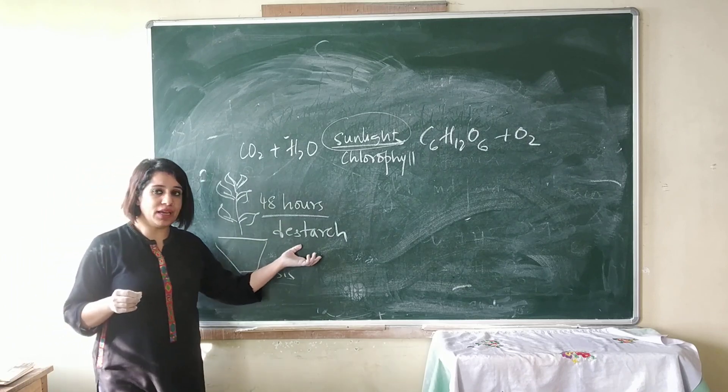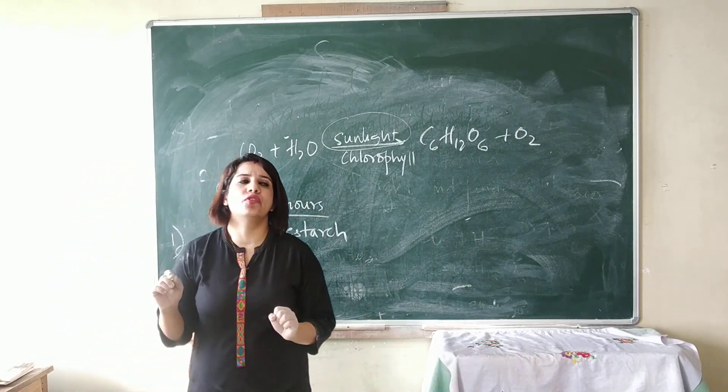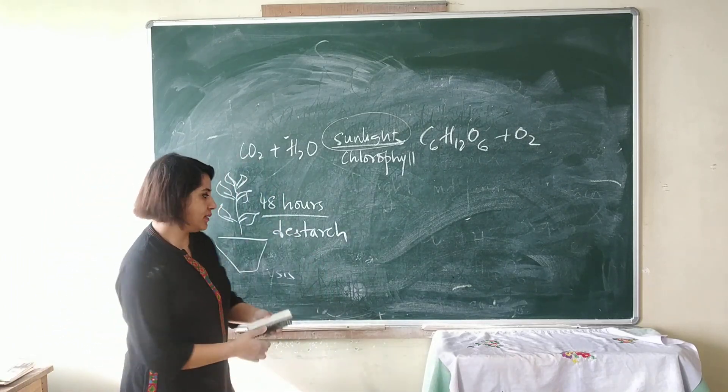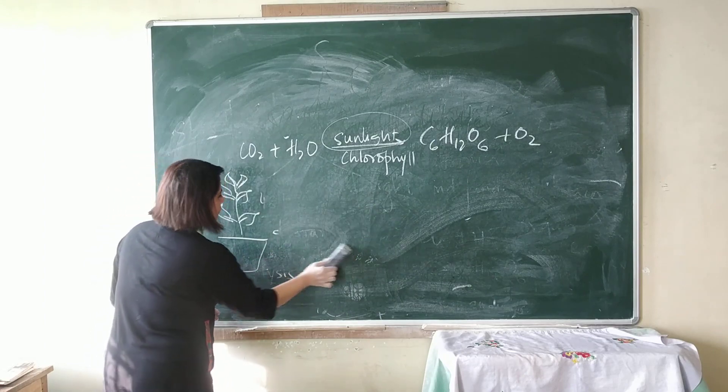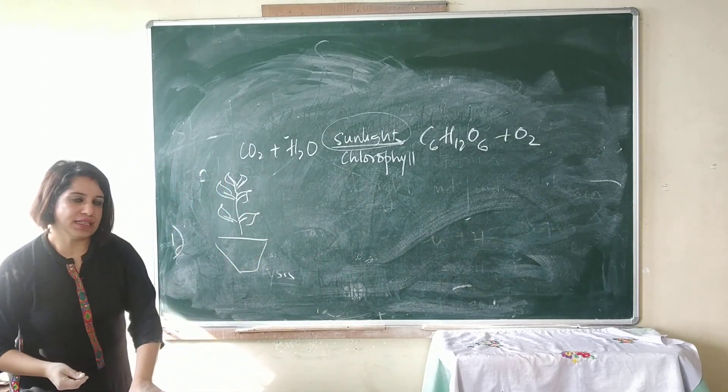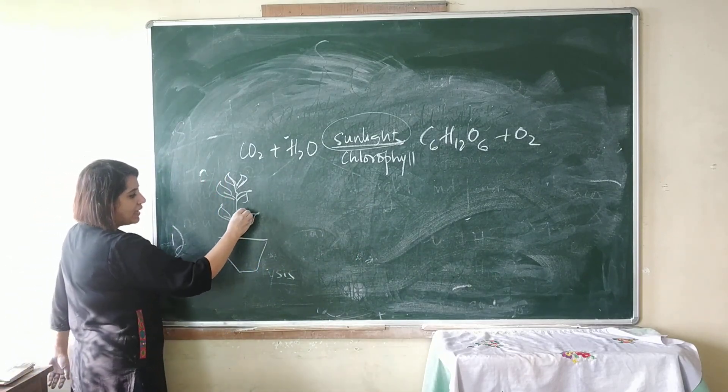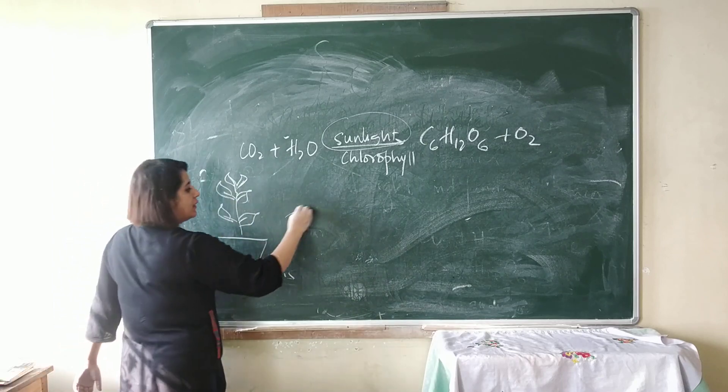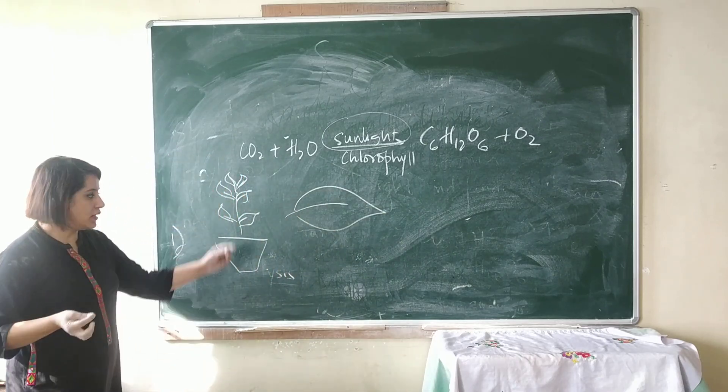How do we destarch the plant? We keep it in a dark room for about 48 hours. After 48 hours, I take out the plant, and without plucking the leaf, I'm just drawing it here so it becomes clear.